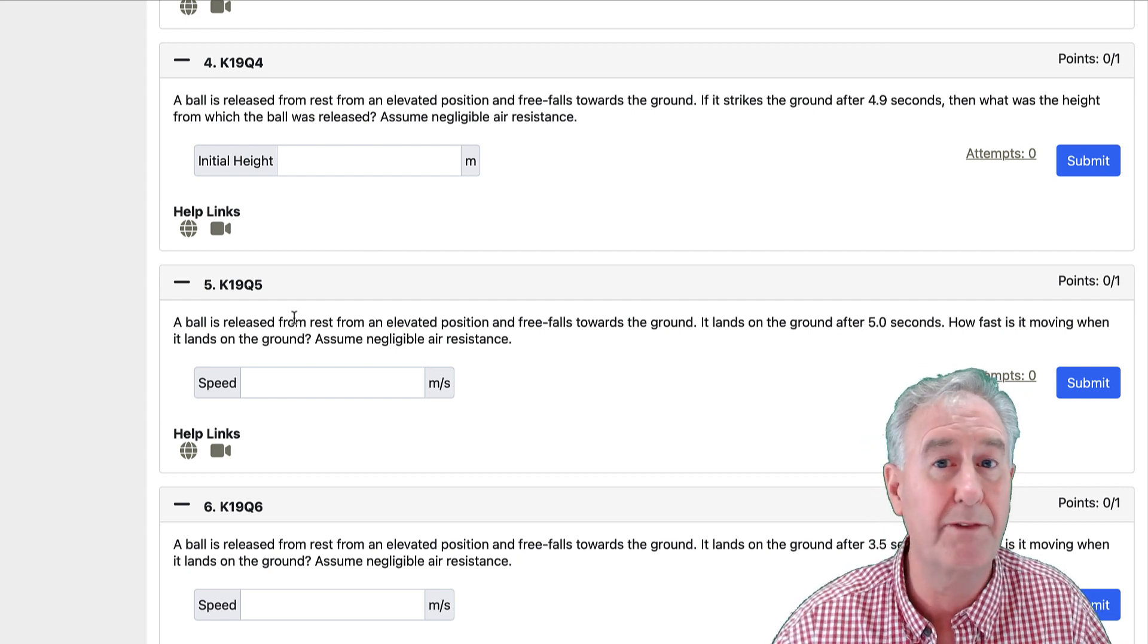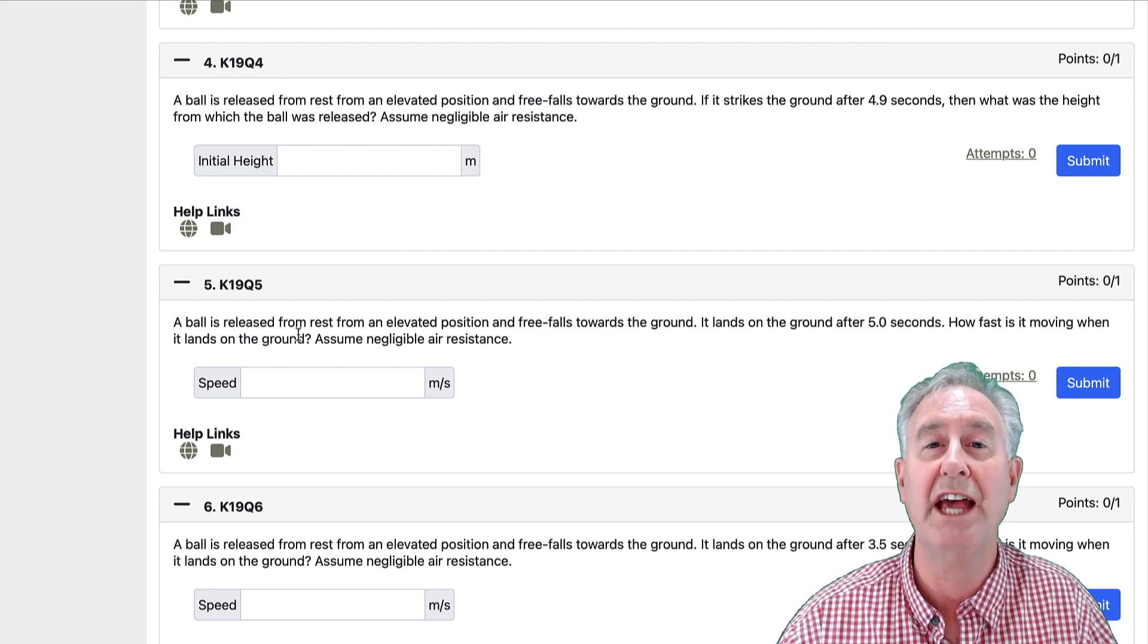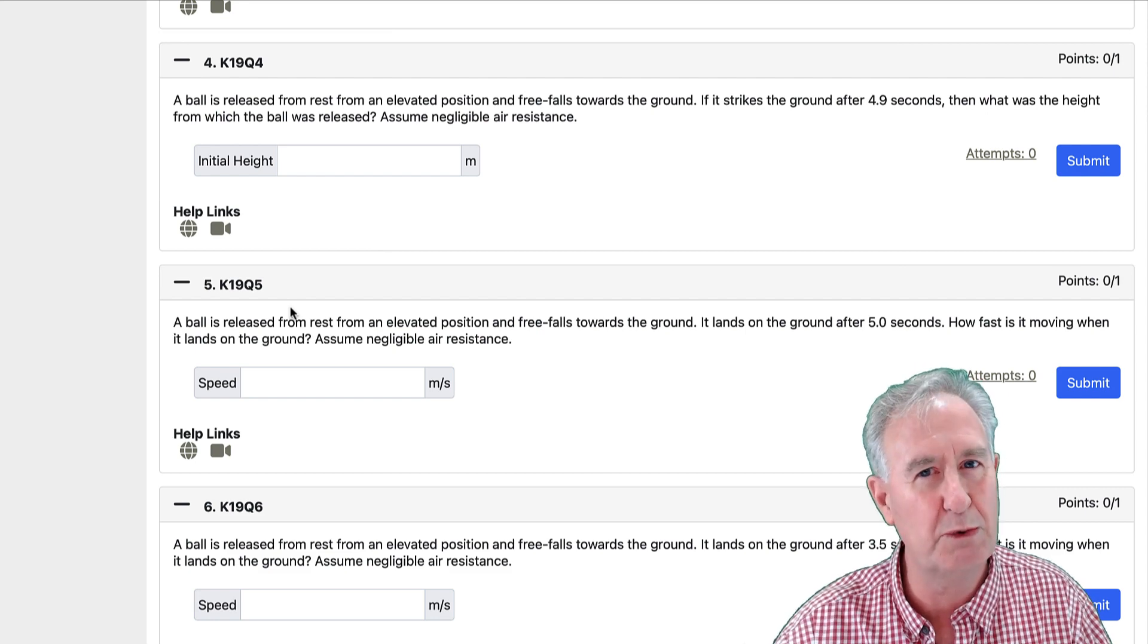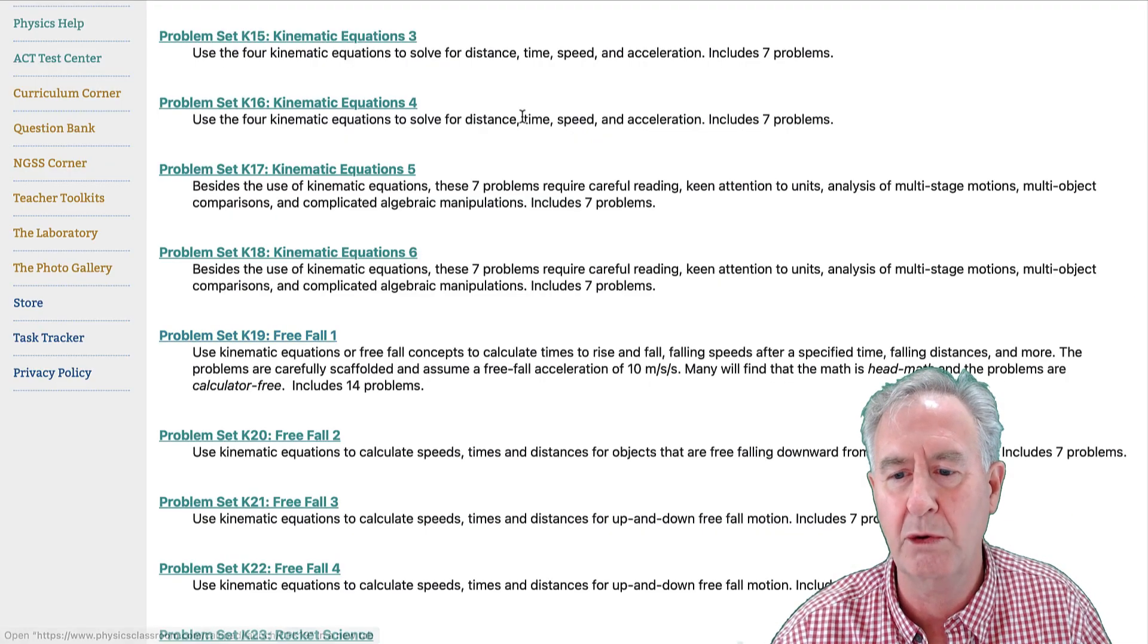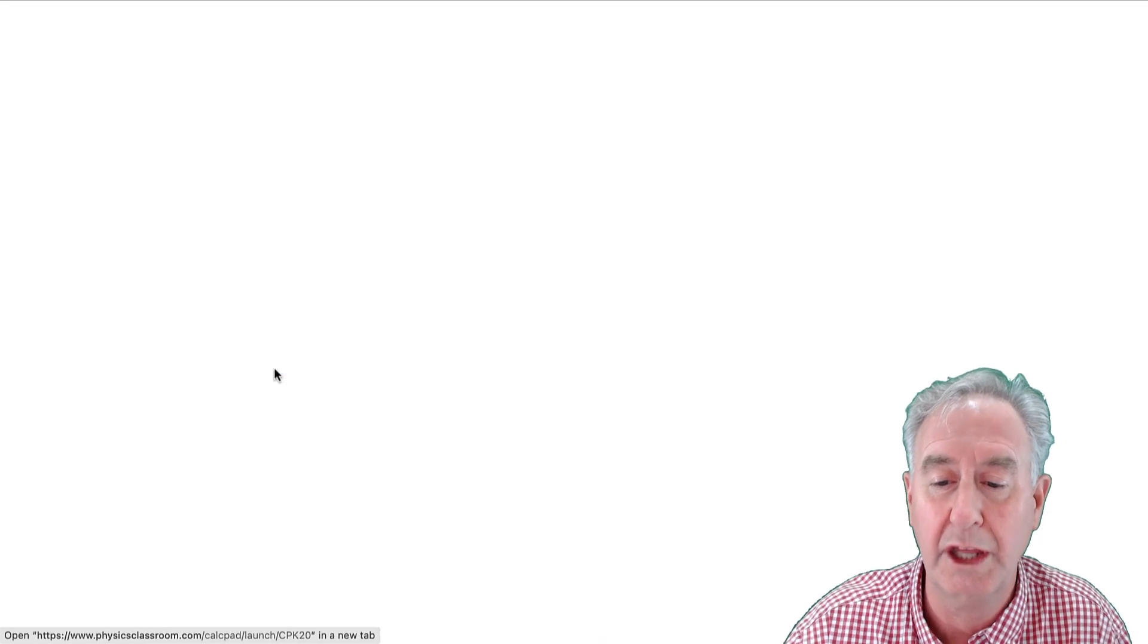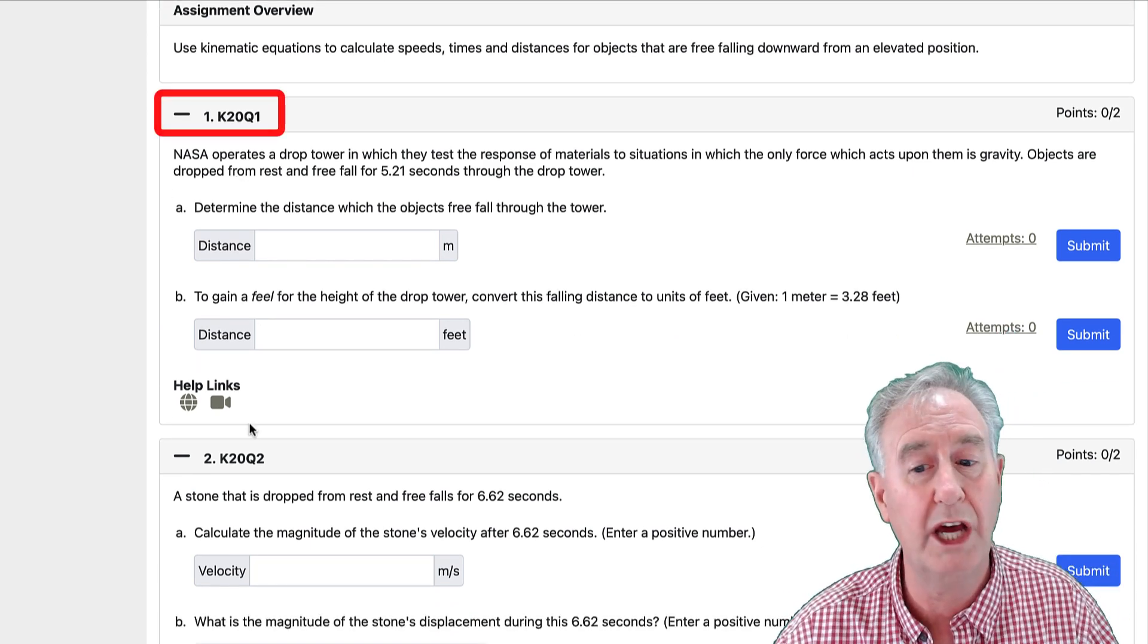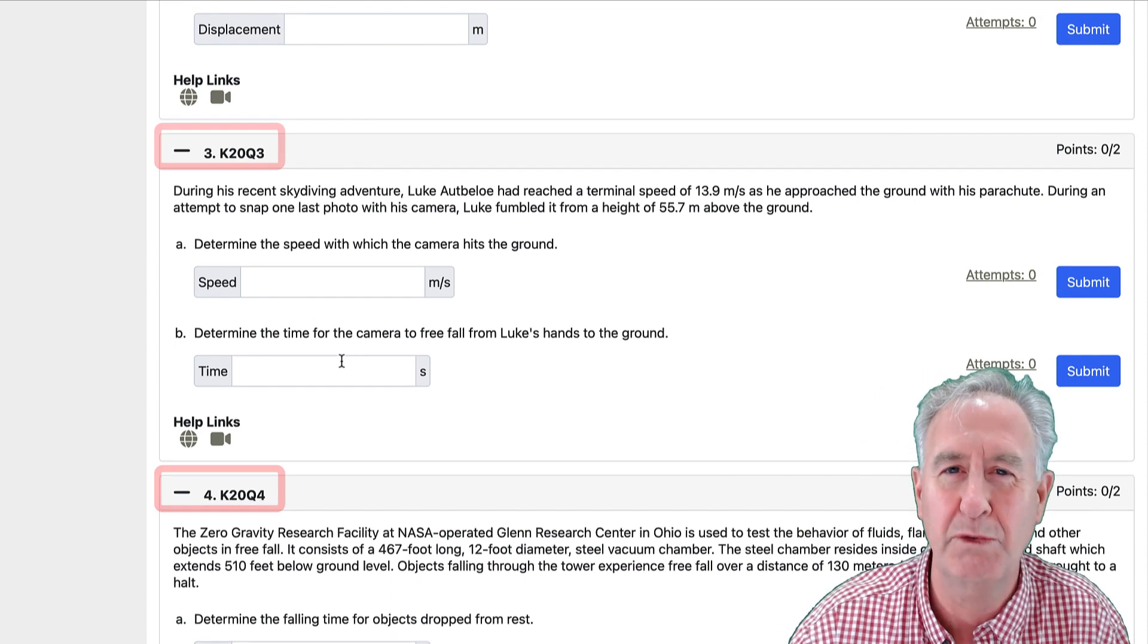Now knowing the name of a problem is pretty important because when you want to create your own problem set, you have to tell Task Tracker which problem you want. And knowing the name of it is rather useful. Now I'm going to exit out of here and go back to that listing of kinematic problem sets. I'm going to go to K20 and as you might expect, those are named K20 Q1, K20 Q2, K20 Q3, and so forth.